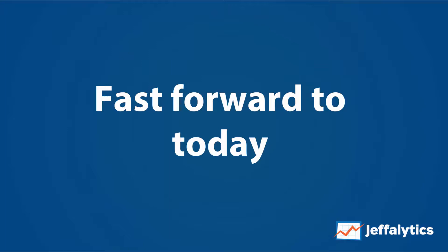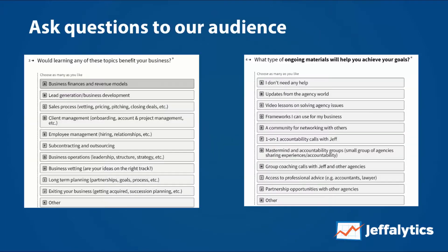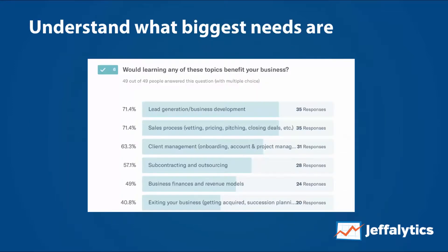If we fast forward to today, we actually use a similar process at Jefflytics. Here's an example of a survey we put out last summer, just starting to understand what people were interested in. We tabulated the votes, put them all together, figuring out who we were going after and what they were interested in. We got responses showing that a lot of them were focused on lead generation, business development, and their sales process. So we ended up creating a course called Sales Jumpstart — much of that was based on the feedback from this survey.